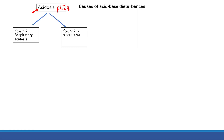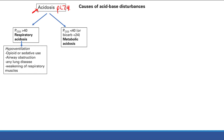Causes of respiratory acidosis: it's going to be hypoventilation — you're not getting rid of CO2, so it's building up. Causes of hypoventilation include opioids or sedatives, which can cause you to not breathe very well, and any variety of lung problems: airway obstruction, any lung disease, weakening of the respiratory muscles. So lung diseases and opioids can all cause hypoventilation and thus a respiratory acidosis.